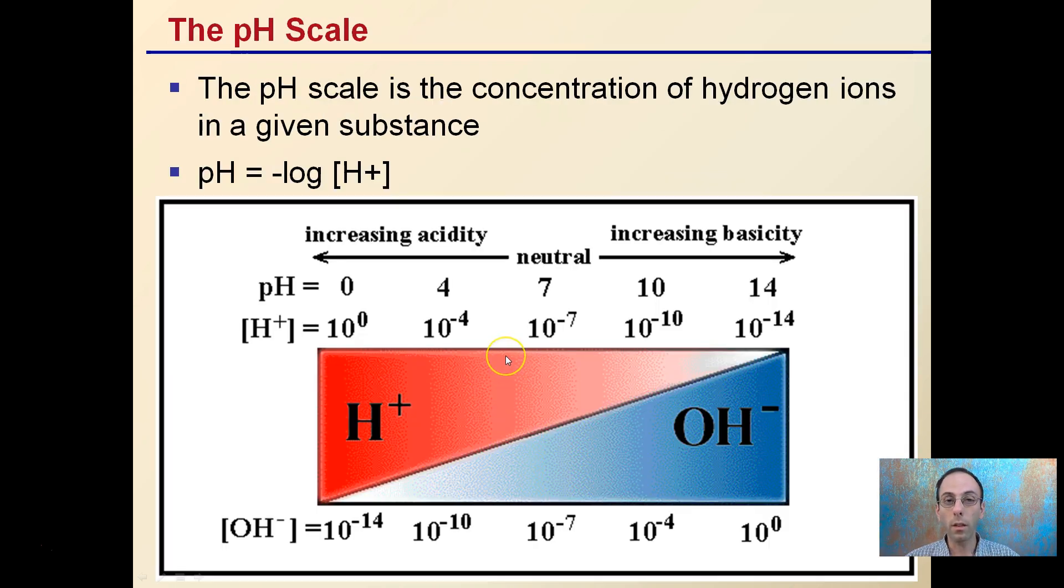Now the pH scale is a concentration of hydrogen ions in a given substance, and the equation behind that is pH equals minus the log, and these brackets mean concentration of hydrogen ions. pH neutral of 7 has equal amounts of hydrogen ions and equal amounts of hydroxide ions. As we become increasing acidity, the percentage of our hydrogen ions increases. As we become more basic, the hydrogen ions decrease. Remember, pOH would look at the opposite, the hydroxide ions.